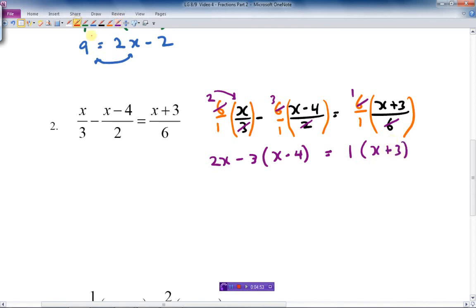So let's multiply those brackets out now. And so I just take them all by negative 3 times this. So first of all, it's 2x minus 3x. 3 times x. And negative 3 times negative 4 is positive 12. 1 times this is quite easy. It's just x plus 3. And the bracket goes away. So let's join like terms together. We happen to have a couple of like terms here. 2x minus 3x is minus x plus 12 equals x plus 3.